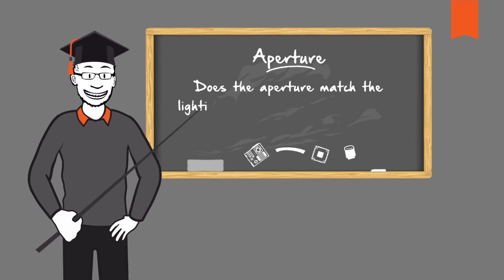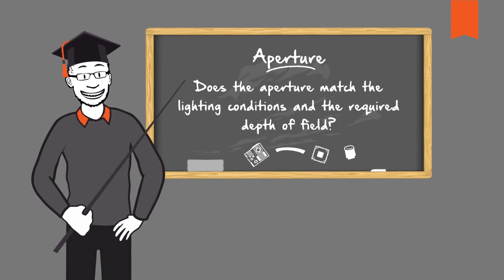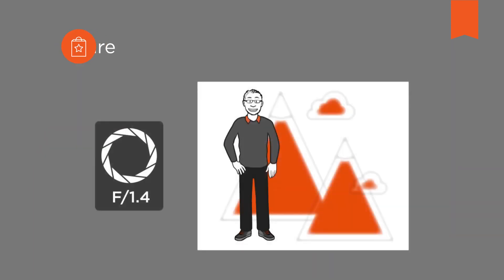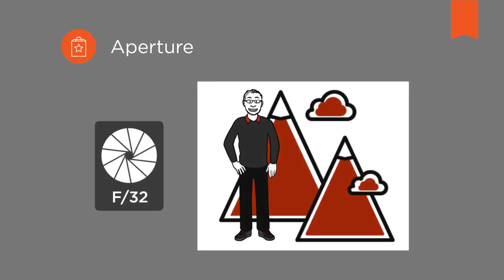Does the aperture match the lighting conditions and the required depth of field? The aperture of a lens will determine how much light will reach the sensor and is given by the F number. The larger this number, the smaller the aperture and the less light comes through the lens. In this case, sufficient lighting is mandatory in the vision system.